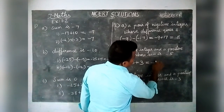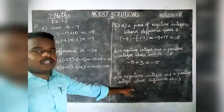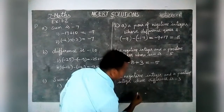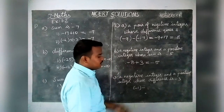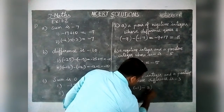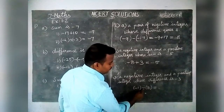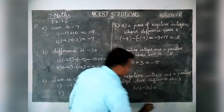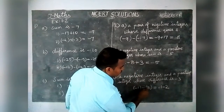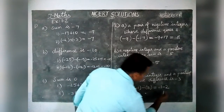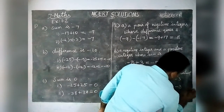Option C: a negative integer and a positive integer whose difference is minus 3. We take one negative number, minus 1, and subtract one positive number, 2. So: minus 1 minus 2. Here, minus into plus becomes minus, giving minus 1 minus 2. Both have the same sign, so when we add them we get minus 3 as the answer.